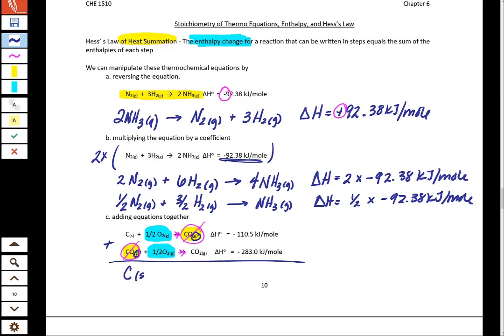So when we take these two equations and add them together, we can now write the results. And as we write the results of the chemical reaction, we can also write the results of the delta H. So for the delta H, we're going to take the negative 110.5 kilojoules per mole and add that to the negative 283.0 kilojoules per mole.